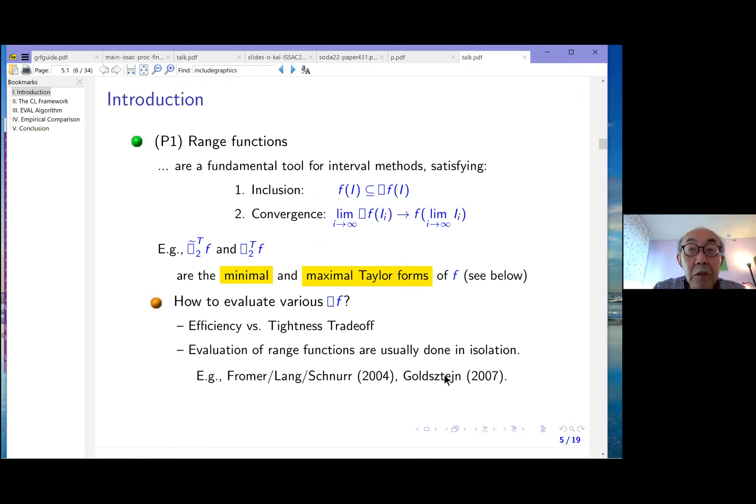Let's briefly review basic facts about range functions. It's a fundamental tool for all interval methods. You can't do anything in interval methods or certified computation without interval methods. The usual assumption is that F of I, the exact range, has to be contained in box F of I. That's called the inclusion property. But really, a hidden assumption is that in the limit, the box function will converge onto the actual value if the sequence of intervals I sub i converges to a single point.